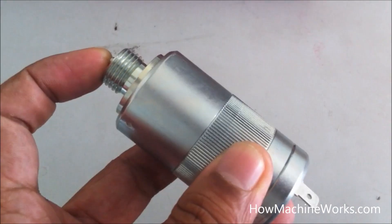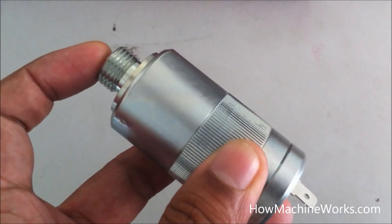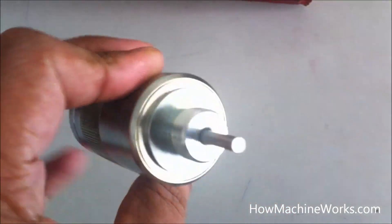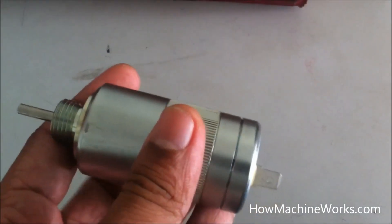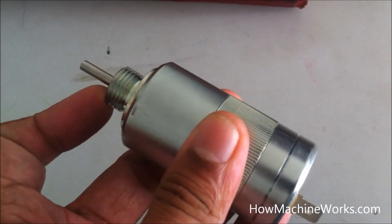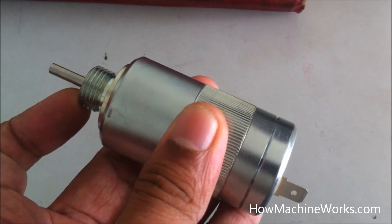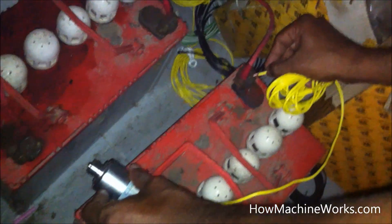The electromagnet energizes and it attracts that particular shaft to move inside. So the movement of this shaft actually controls the fuel injection pump to adjust the flow of the fuel. The fuel is cut off or allowed to flow as per the movement of this shaft.